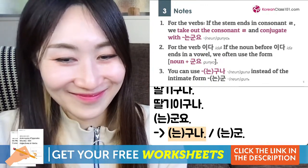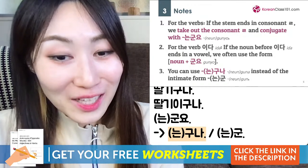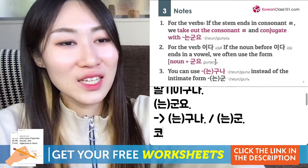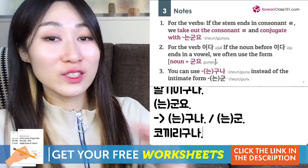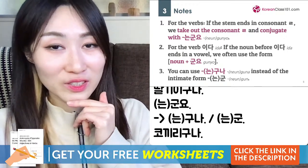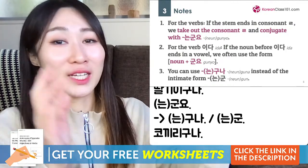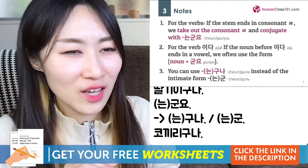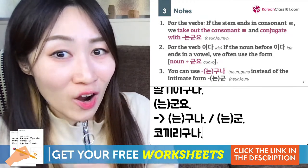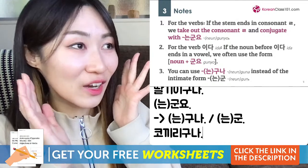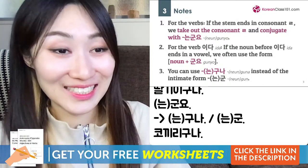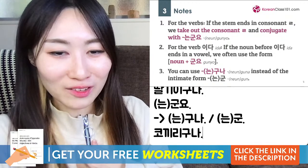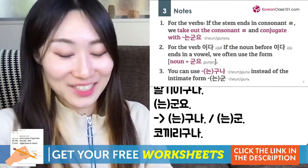For example: 코끼리 — elephant. You went to Africa on safari, heard some sound, thought maybe it was a lion, then saw it. Oh — 코끼리구나! 'I see, it was an elephant, not a lion — I was so surprised!' So 코끼리구나 means: I just noticed, I just learned it's an elephant.